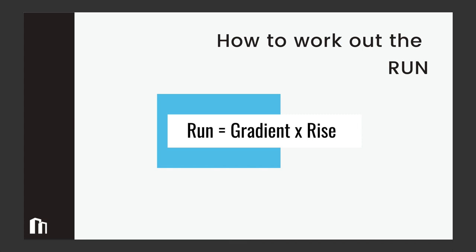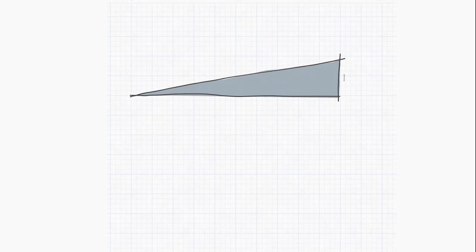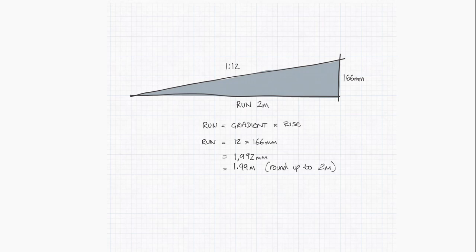Next we are going to look at how to work out the run of a ramp. So in this instance we are wanting to work out the run of this ramp. We know that the gradient is 1 in 12 and we know that the rise of this ramp is 166 millimeters. So run is equal to gradient times the rise. So our gradient is 12 and we need to times that by 166 which is our rise. This comes out at 1,992 millimeters which we convert back to meters as 1.99 or we'll round that up to 2 meters.